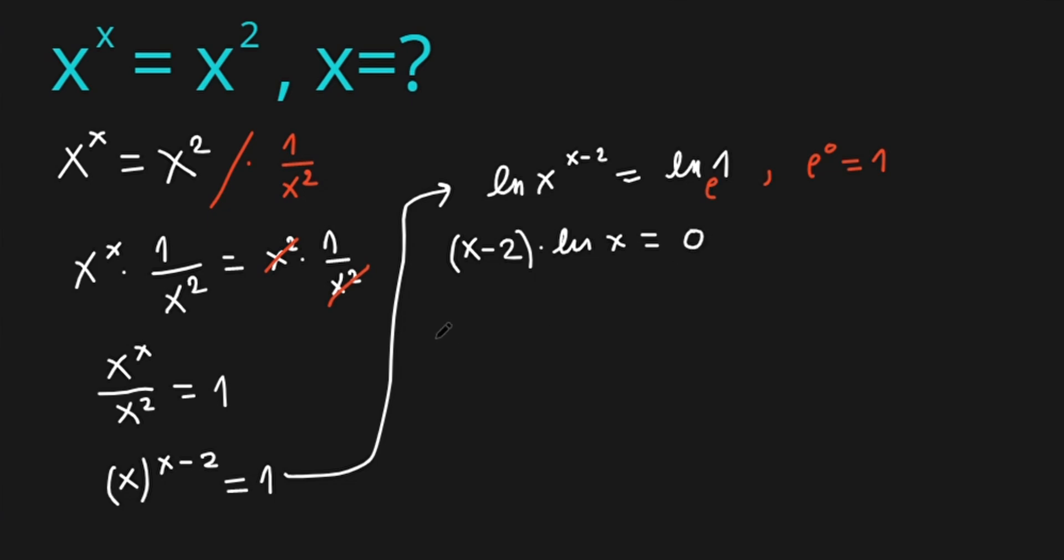So surely this equation has two roots. x minus 2 equals 0 or ln of x equals 0. Here x is 2 and here e to the power of 0 is x. So this means x is 1. And this is our answer.